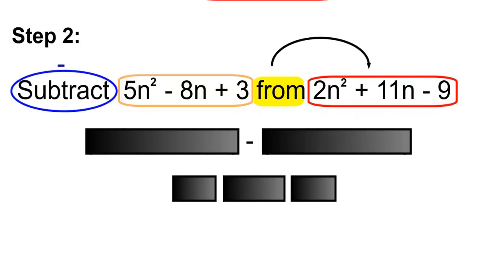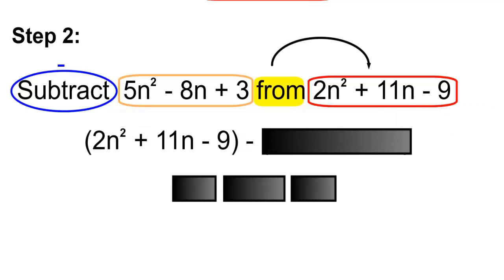Since you're subtracting 5n squared minus 8n plus 3 from that, you'll have to write the 2n squared plus 11n minus 9 first, then write subtract, and then write the second polynomial.